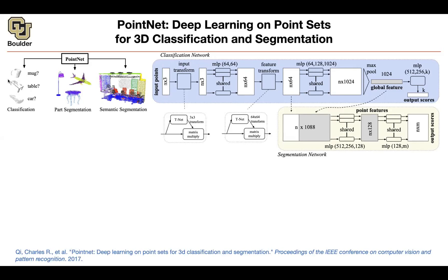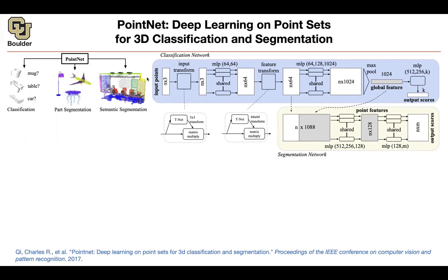Another idea is to work with point clouds directly without voxelizing. Your input has N points, and N can change from data point to data point — a mug might have a different N than a table. Each point has features like X, Y, Z coordinates. The method must be invariant to permutations of these points. In the end, you want to take a set of points as input and output K scores — one per class.